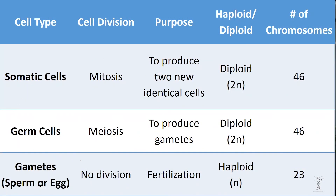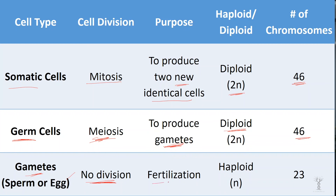Here is a summary chart comparing mitosis and meiosis. Mitosis occurs in somatic cells and produces identical diploid daughter cells with 46 chromosomes. Meiosis occurs in germ cells in the gonads — testes or ovaries — and produces gametes, which are sperm or eggs. Germ cells are diploid with 46 chromosomes, but the resulting gametes are haploid with 23 chromosomes — the only cells in the body with 23 chromosomes — and their purpose is fertilization.